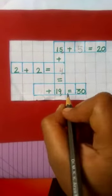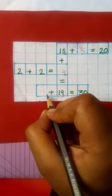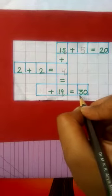Now, this line. We have to write one number here also. This is number 19. Dash plus 19 is equal to 30.